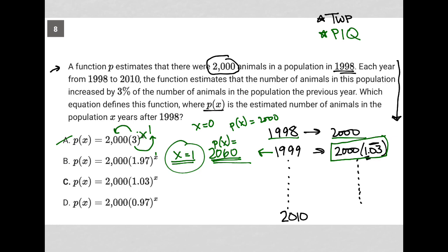I can do the same thing for choice B. If I replace this X with a 1, 1.97 to the first power is 1.97. 1.97 times 2,000 is not going to be the same as 2,000 times 1.03. So that's gone as well.